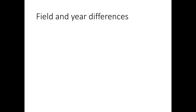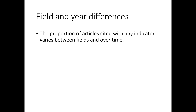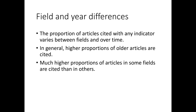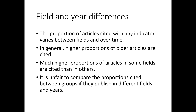We meet again, however, the field and year differences issue. The proportion of articles cited with any indicator may vary between fields and over time. Higher proportions of older articles are likely to be cited, and much higher proportions of articles in some fields are cited than in others. So again we need to make sure we're not being unfair to some fields or years. It's unfair to compare proportions cited between groups if they publish in different fields and years, or in different combinations or amounts.